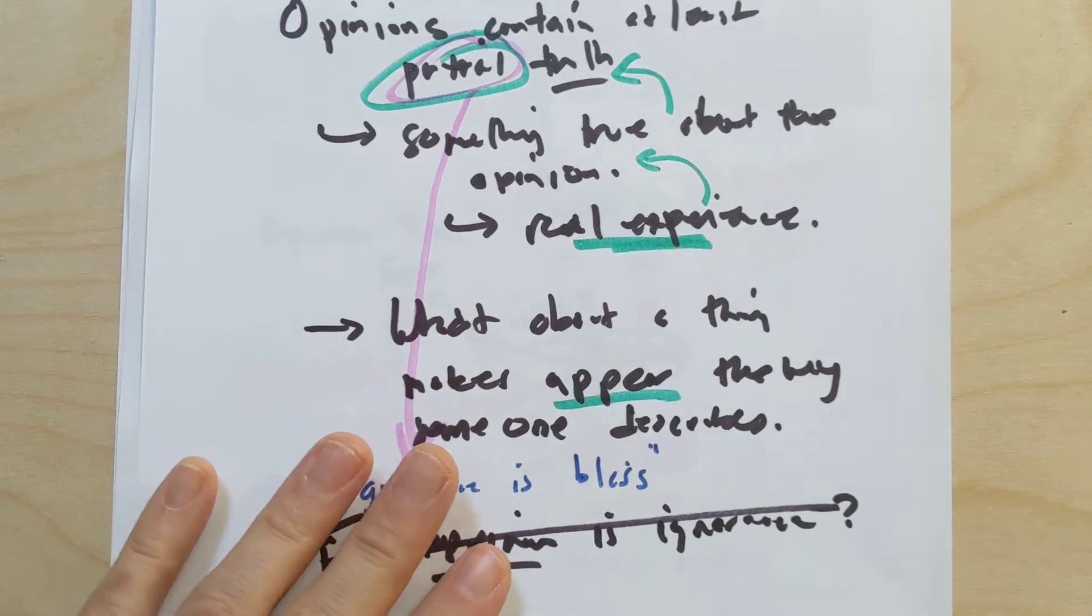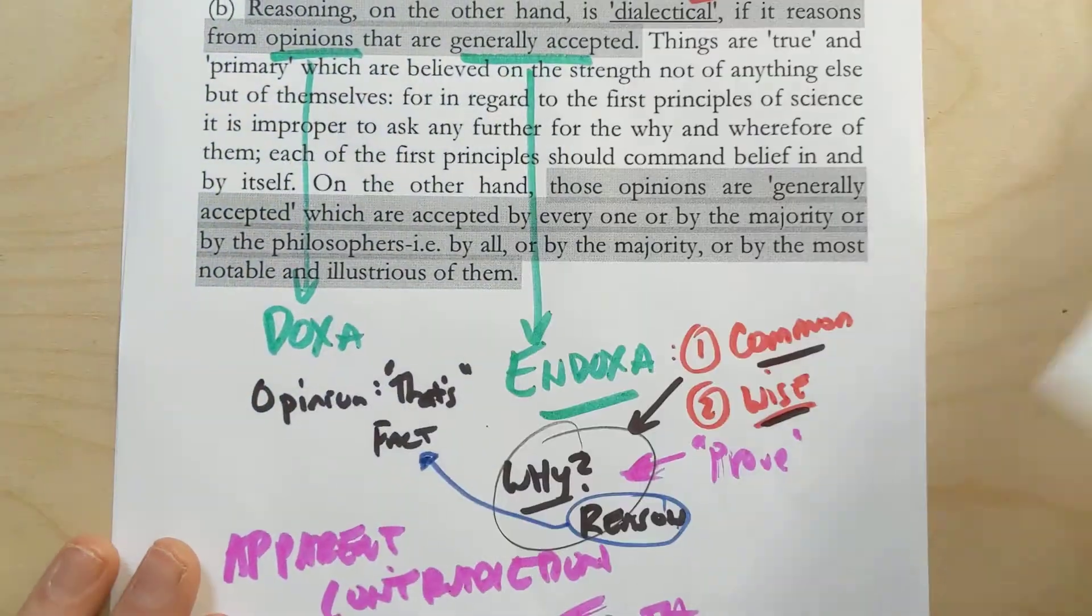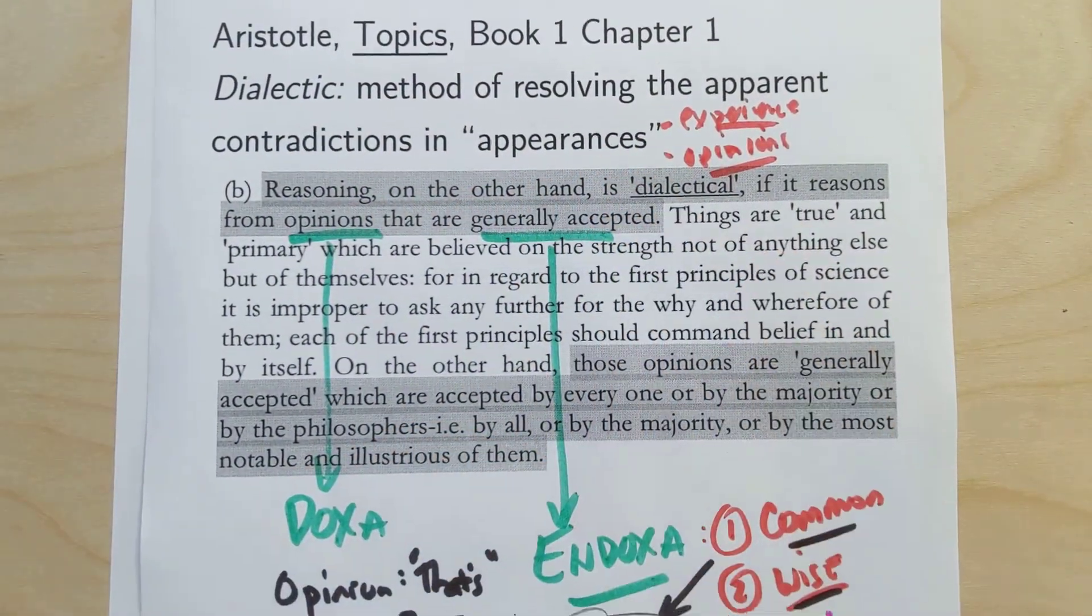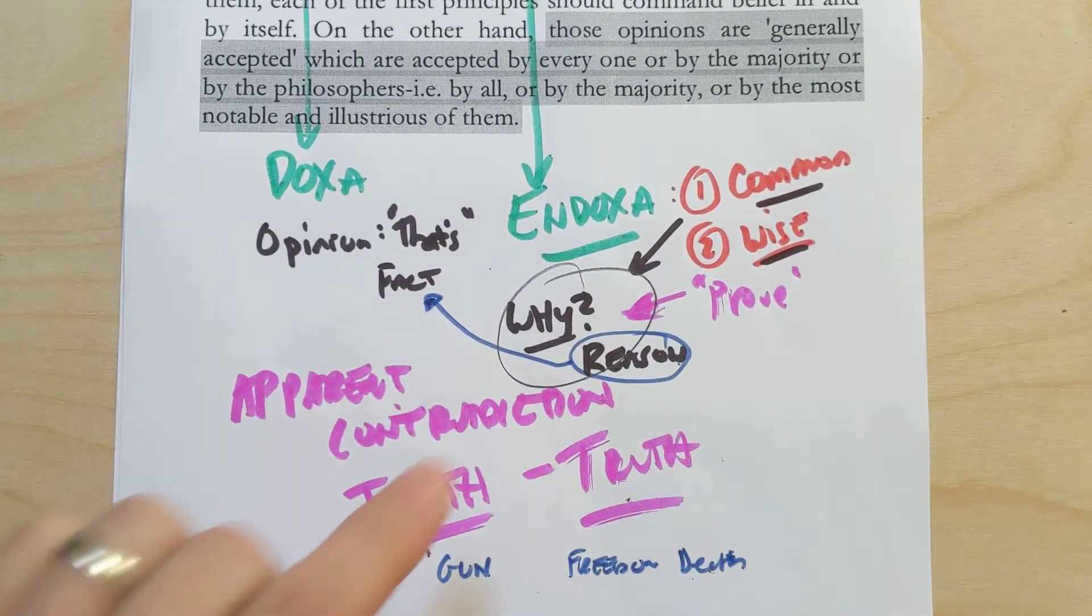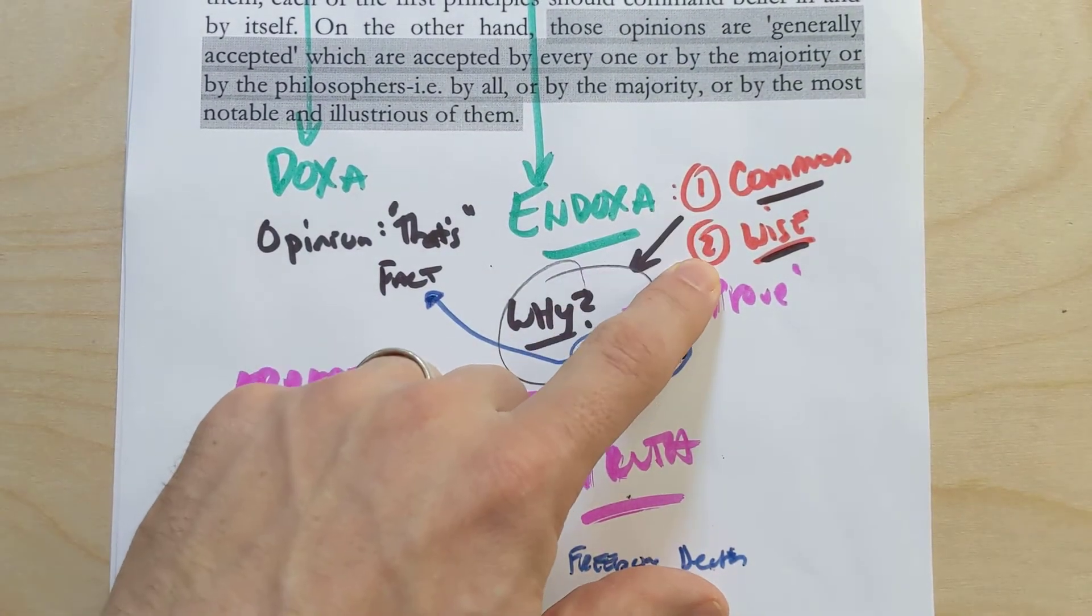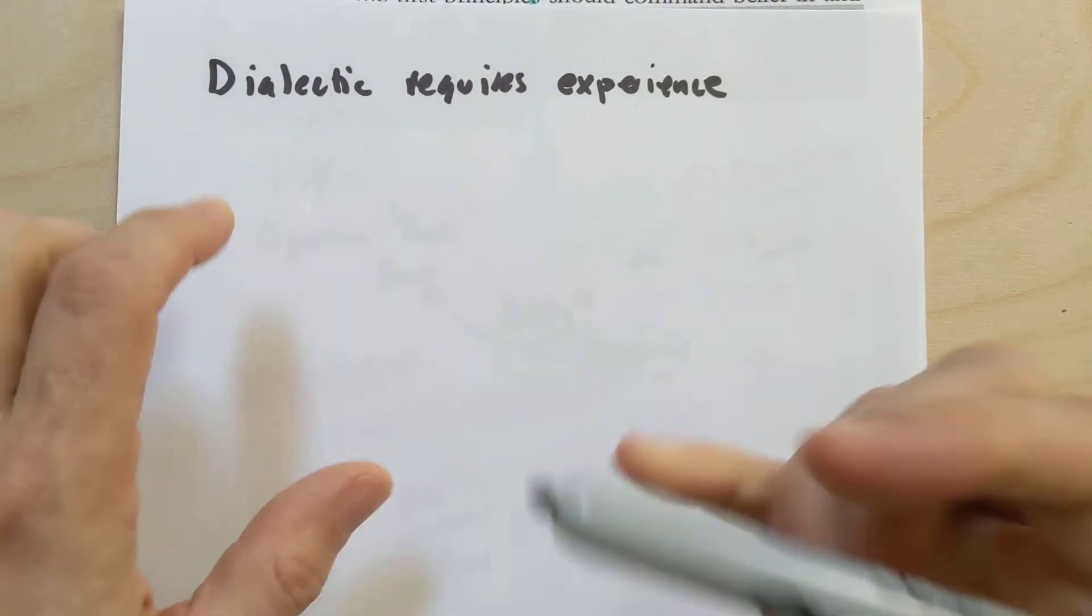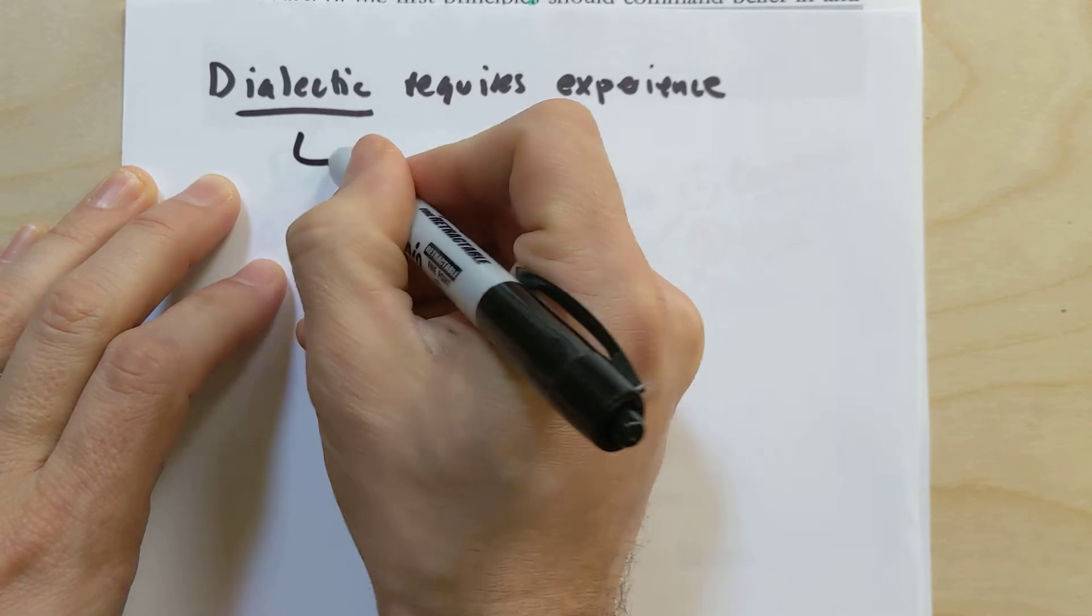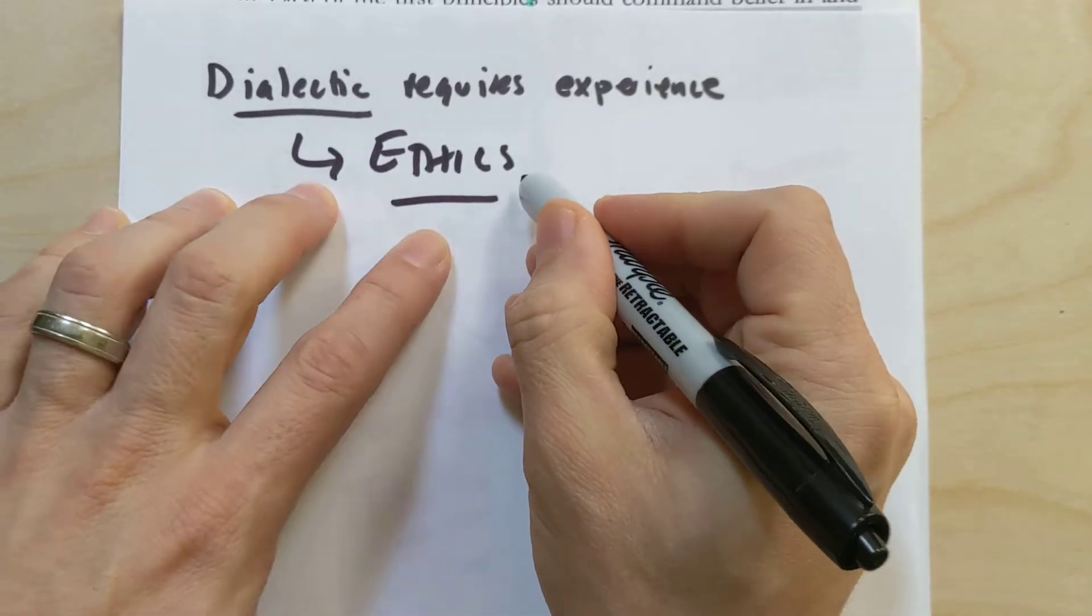Aristotle wants to take this very seriously. If we're going to take experiences and opinions so seriously as being something that we need to dialectically examine in order to get to the truth of things, to get to real definitions, and we're going to take them so seriously, especially the opinions of the common and the wise, this means that you need to actually have some experience. And especially the dialectic that Aristotle is going to try to do when it comes to ethics, which is what this whole section of our course is really going to be about.